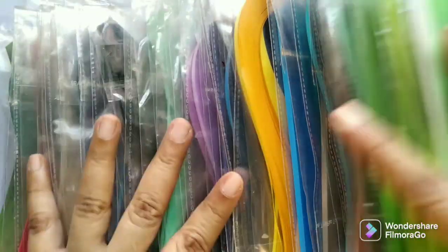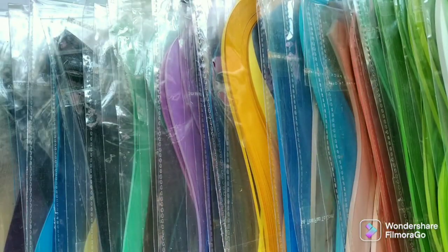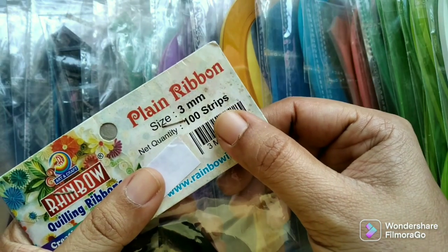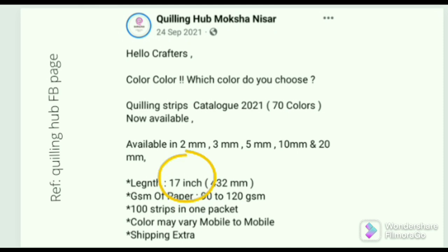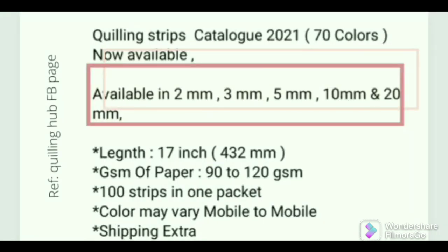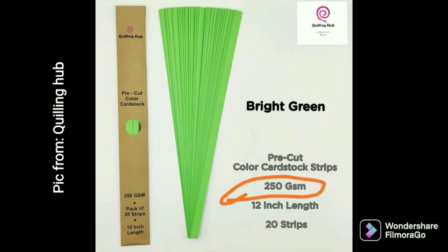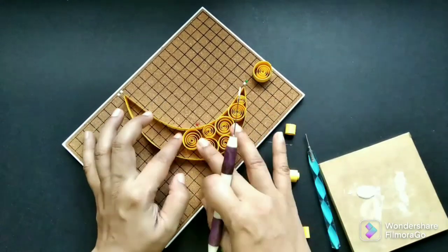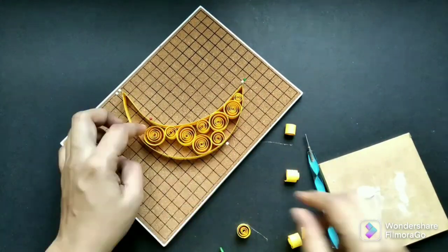When you buy a quilling paper strip, you could note a few things: the number of strips in a pack may be like 100 strips or 50 strips, the length of a strip, the width of a strip like 3mm. The next important thing that is usually not mentioned in the packs is the thickness or weight of paper strips.